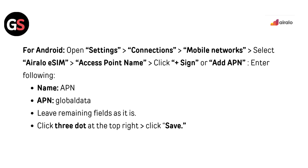For Android APN settings: open Settings, go to Connections or Mobile Networks. Select the AirLo eSIM, then Access Point Names. Click the plus sign or 'Add APN'. Enter the Name and set the APN to 'global data'. Leave the remaining fields as they are. Click the three-dot menu at the top right and then click Save.